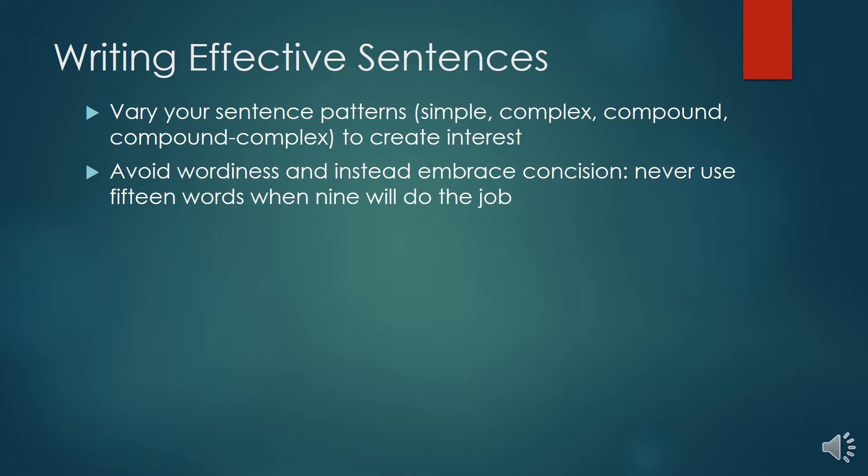Another technique for writing really effective sentences is to avoid wordiness and instead embrace concision. Concision simply means writing that is doing the job in a sufficient number of words, not an excess of words. So a really quick way to say this is never use fifteen words when nine words will do the job. This is hard for lots of students because a lot of people have gotten used to purposely using more words than are needed as a way to meet a minimum word count requirement. And it can be difficult to turn that off and try to write for the sake of brevity or concision.